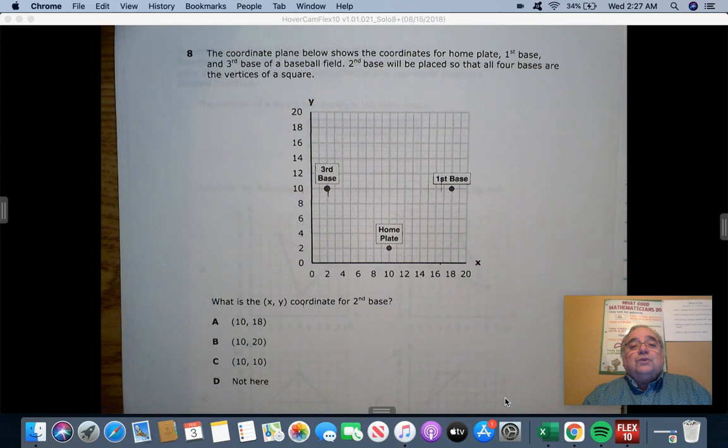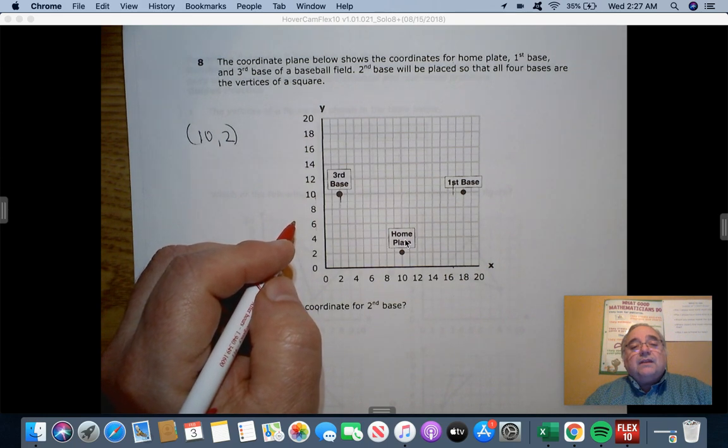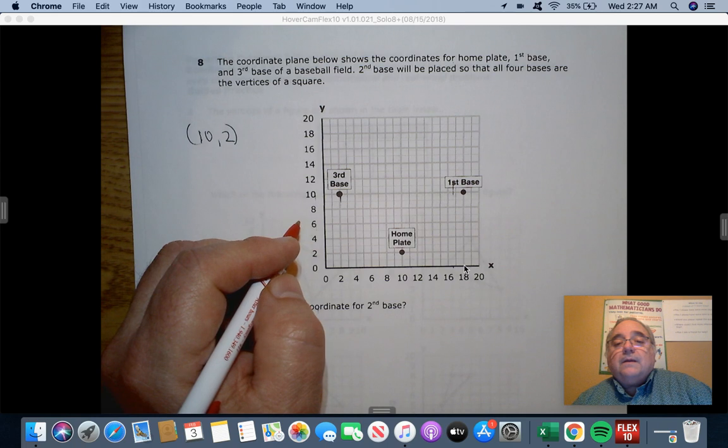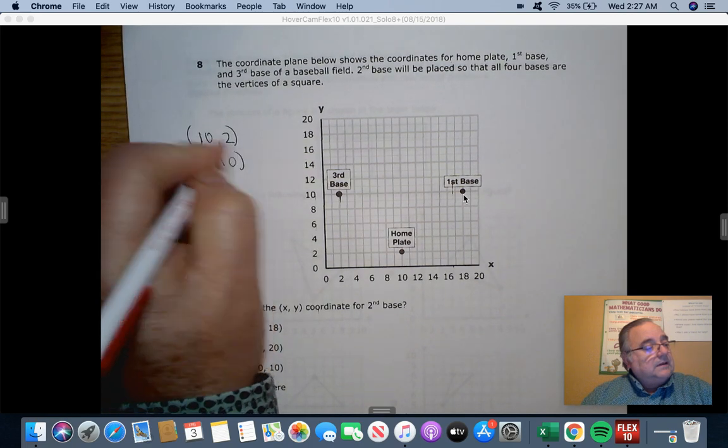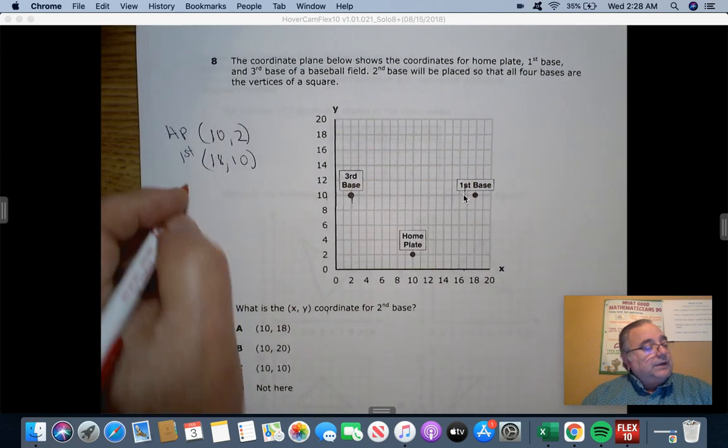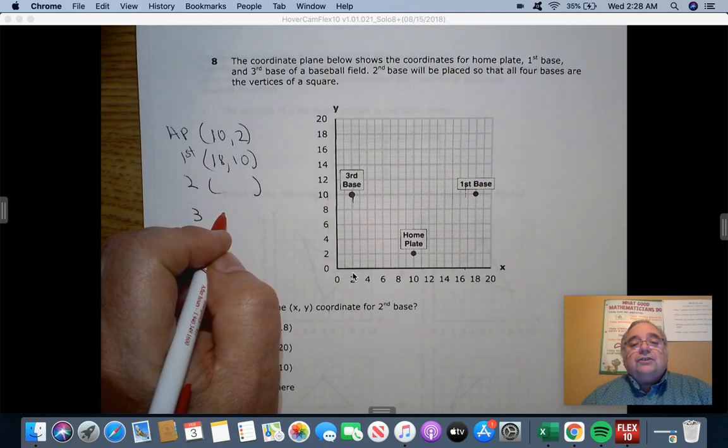The coordinate plane below shows the coordinates for home plate, first base, and third base of a baseball field. Second base will be placed so that all four bases are the vertices or sides of a square. So we see that home plate is at coordinate 10, 2. I always like to do that. Make sure it's 10, 2. That lets me know where that's at. I see that first base is at 18, 10. It's home plate, first. We need second. We don't have second, so we're guessing on that. And third is at 2 and 10.